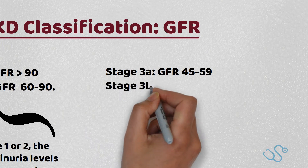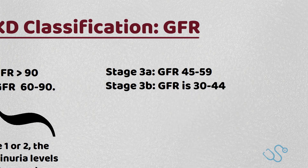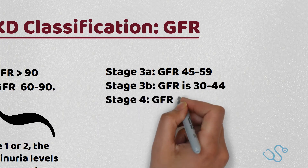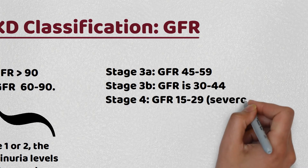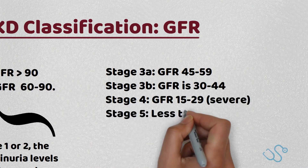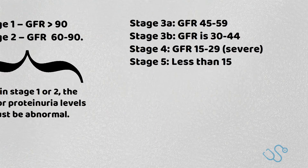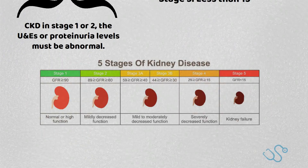Stage 3b is a GFR between 30 and 44. Stage 4 is classified as severe with a GFR of less than 30, and Stage 5 is when it's less than 15 — this is when renal replacement therapy, be it dialysis or transplants, is actually considered.